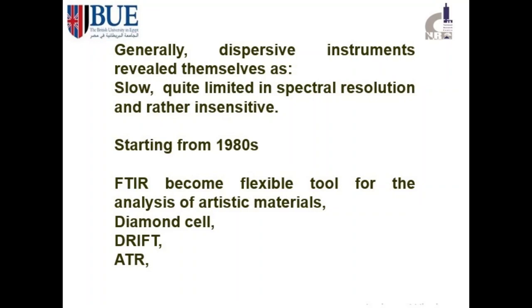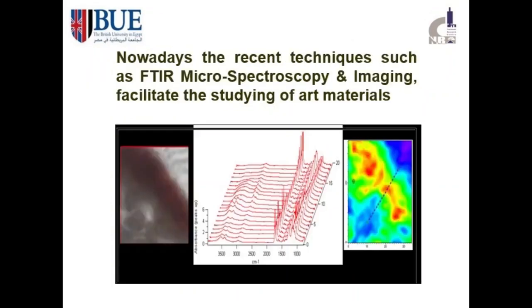In these days, FTIR can be combined with a microscope, forming microspectroscopy for imaging and mapping of artifacts, which is of great concern in studying cultural heritage objects.